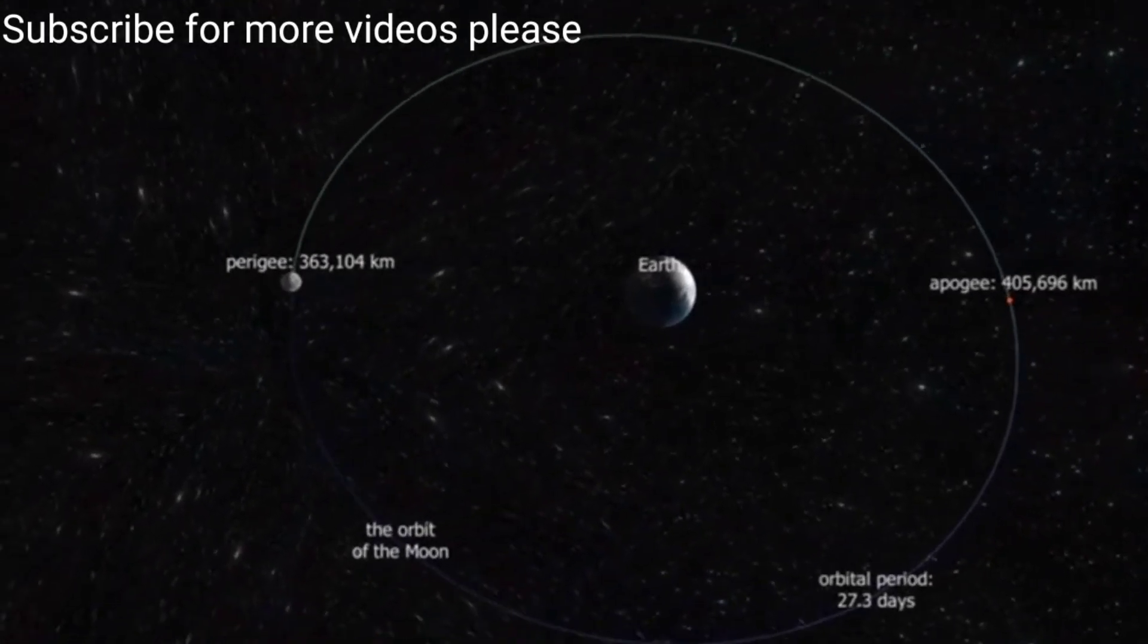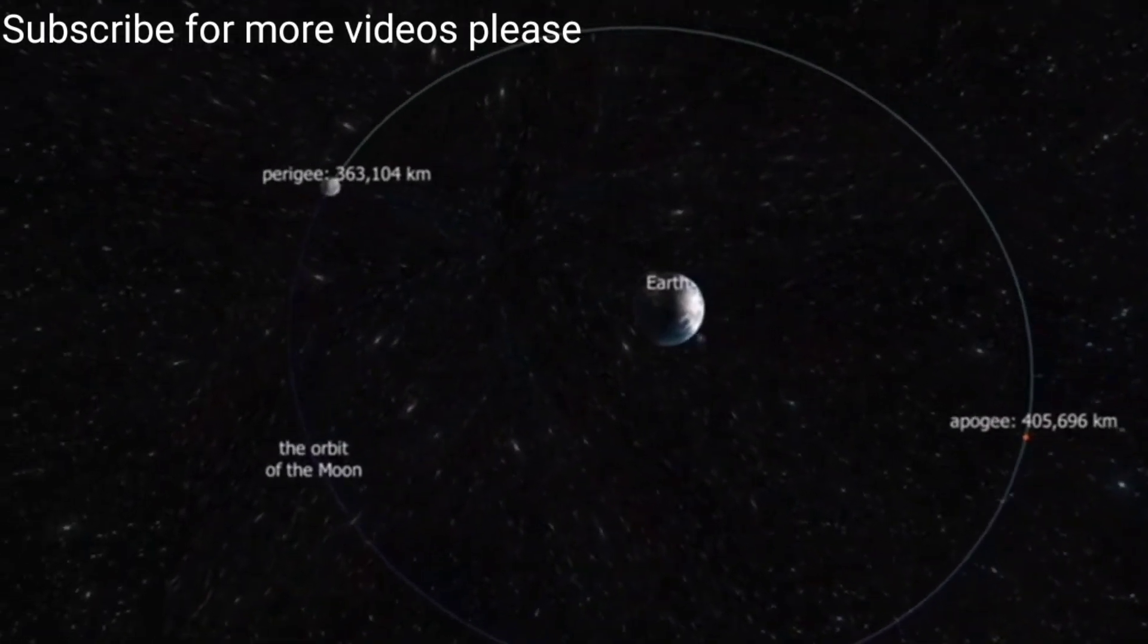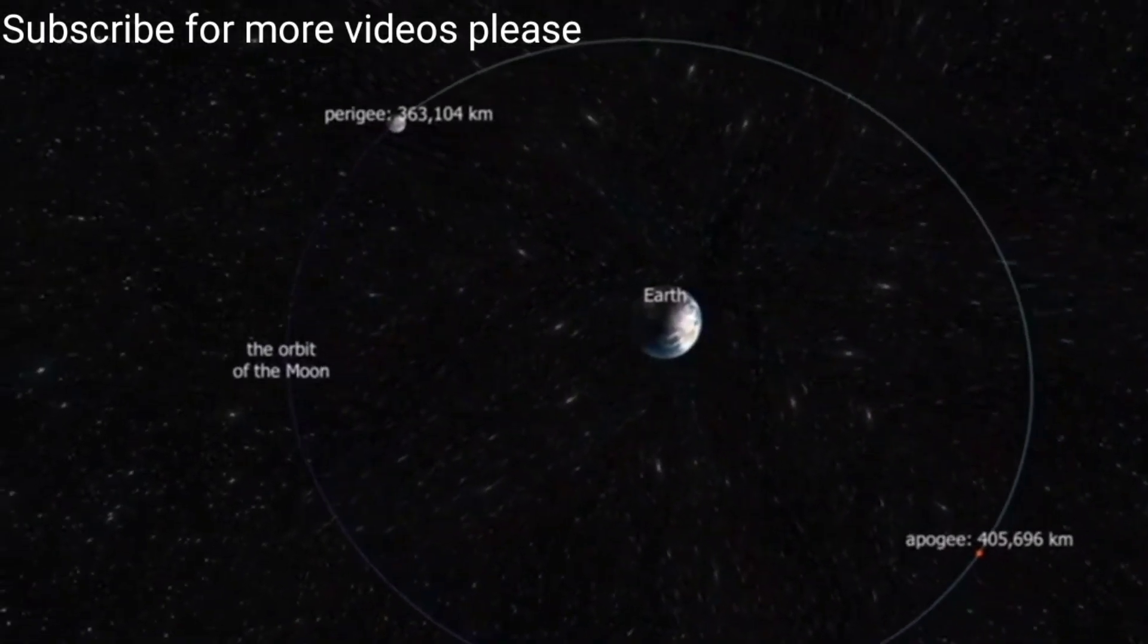The Earth's only natural satellite is the Moon, which formed about 4.53 billion years ago.